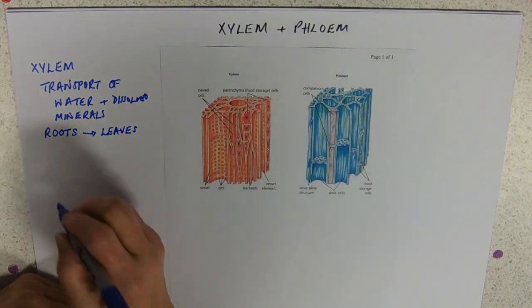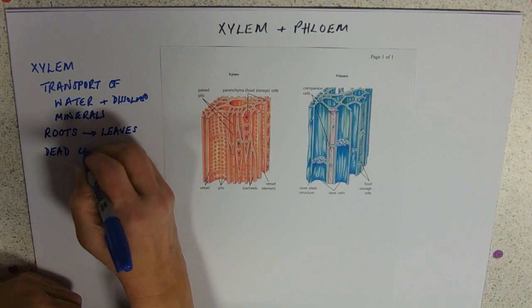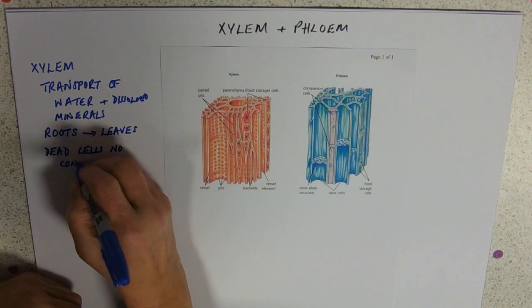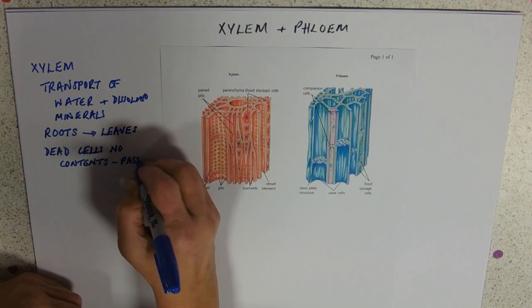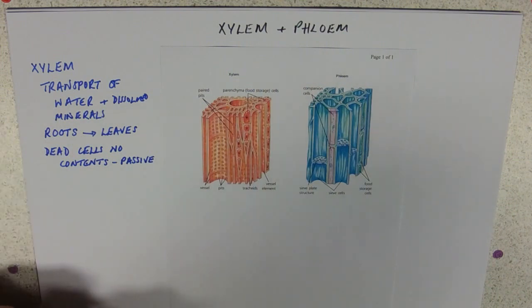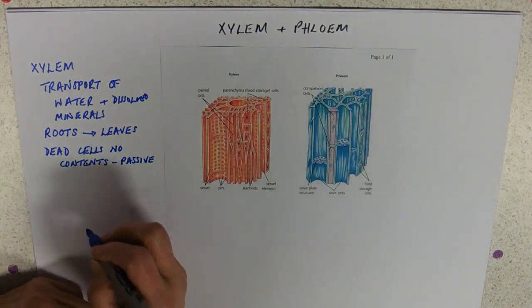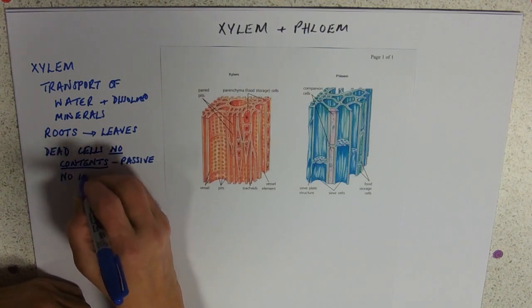And these cells are dead cells, they have no contents. And that means that the transport of water is passive, it's not using ATP at all, and it will happen in dead tissue. So if we're going to transport water in bulk, we don't want any impediment. And so these cells have no contents, so there's no impediment to flow.